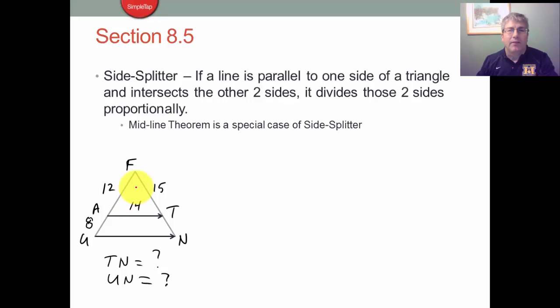The first one is called the side splitter, and the side splitter says that if a line is parallel to one side of a triangle and intersects the other two sides, it divides those sides proportionally.